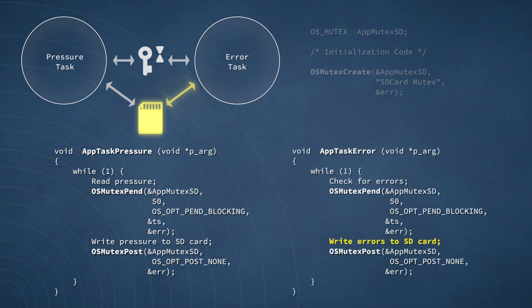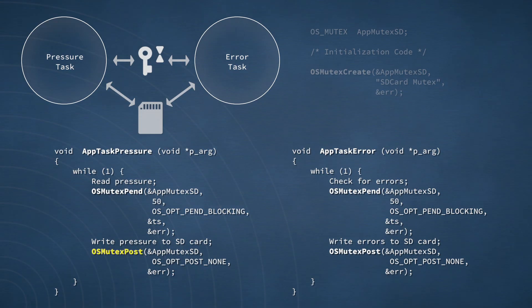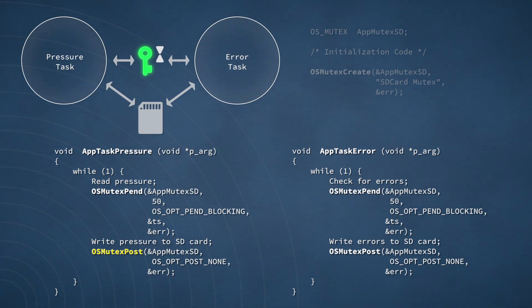However, if the error task happens to be in the process of accessing the card following a pend of its own, the mutex would be unavailable, and the pressure task would be forced to wait. The error task would have to issue a post to bring the pressure task out of the waiting state. Following the OSMutexPend call, there's a line of pseudocode that writes the newly read pressure values to the SD card. Because of the pend operation, any subsequent code in the task would be guaranteed exclusive access to the card. The pressure task ultimately gives up its exclusive access to the SD card by making a call to OSMutexPost. If the error task were already waiting on the mutex, then the post function would make the error task ready to run. Otherwise, the function would simply move the mutex into the available state.